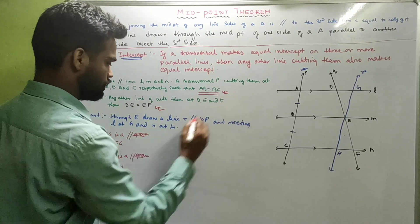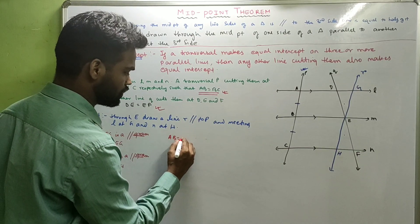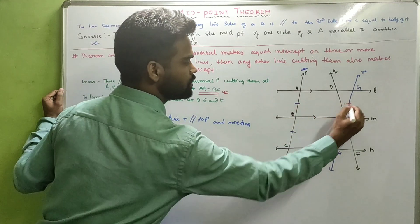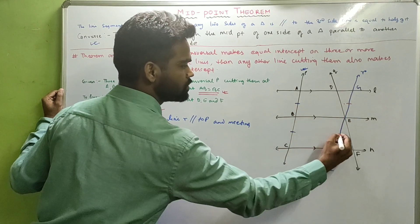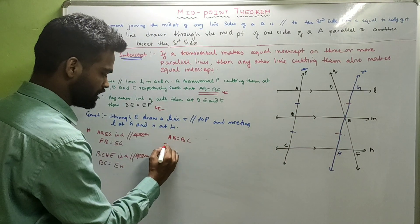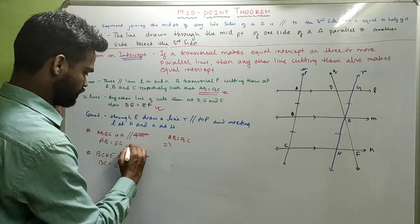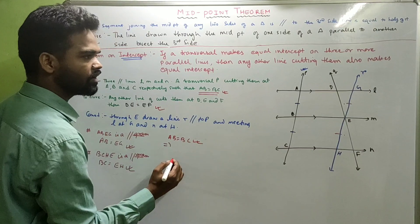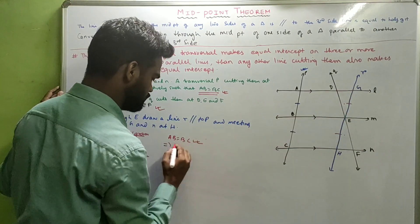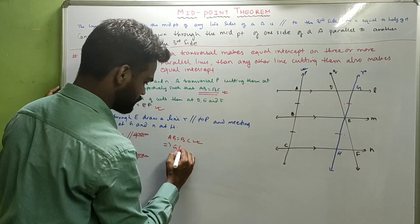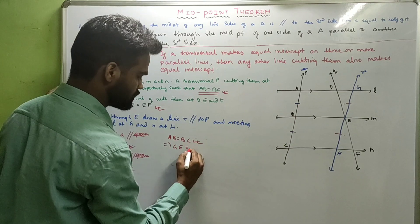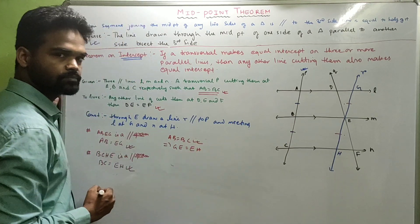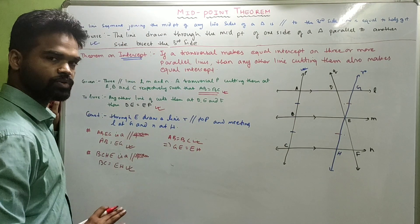We know that AB equals BC (given). AB equals EG and BC equals EH. Which ultimately means, from these three results, GE equals EH.